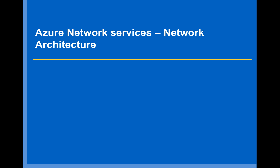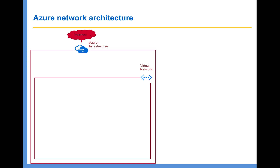Welcome to this lecture. In this lecture, I'm going to take you through Azure Network Architecture. One of the fundamental building blocks of Azure Network Architecture is Virtual Network. Basically, this is where you can define your range of IP addresses, you can define DNS settings. You can think of Virtual Network as a representation of your own network on the cloud.